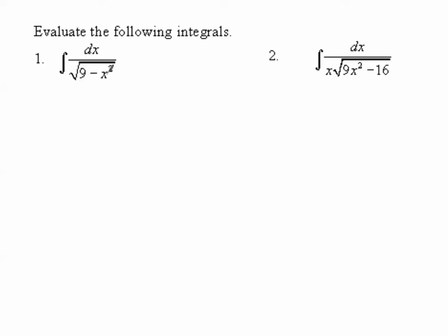Let's think about evaluating integrals and our strategy for figuring out which form we have. If I see a rational function, I have a mental list of things to consider. Today we're focusing on which of our three inverse trig functions we're looking at. I notice a radical in the denominator, so I ask: is it arc sine or arc secant? Arc tangent doesn't have a radical. Next, I ask: when subtracting, where is the variable expression — is it positive or negative?